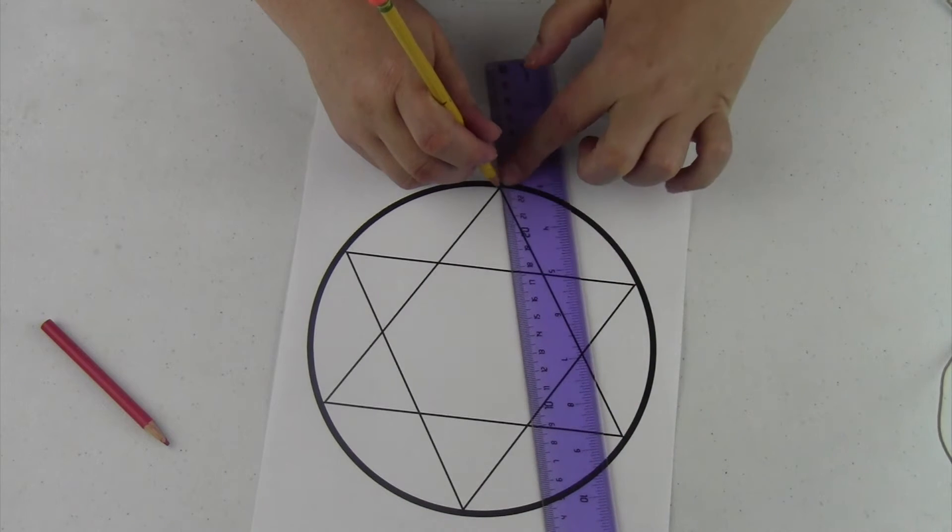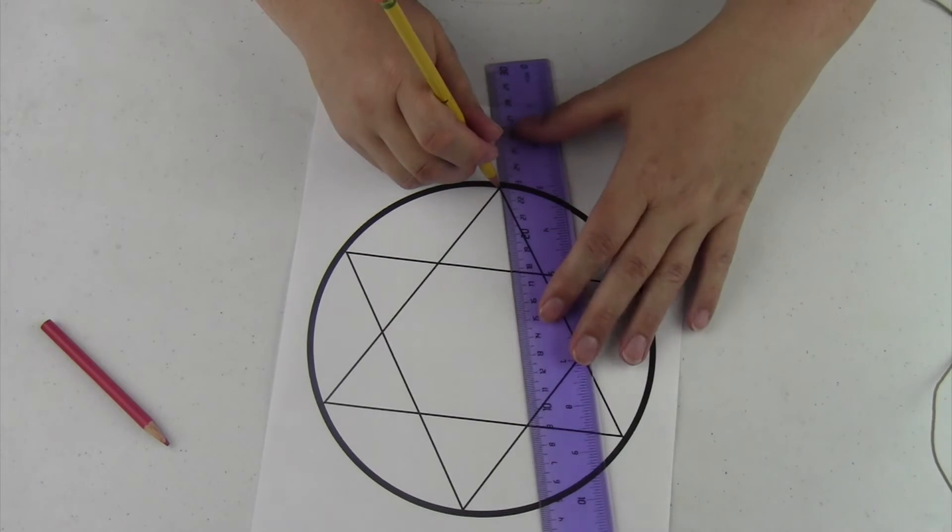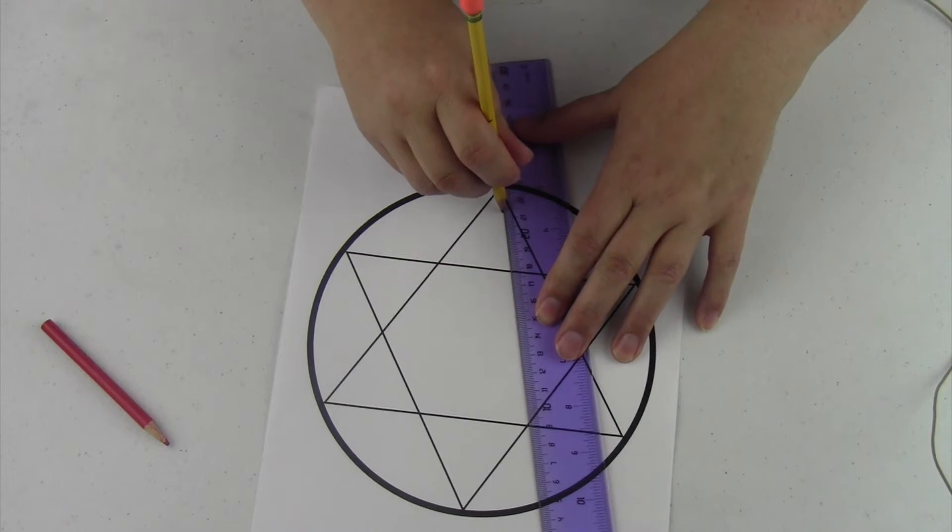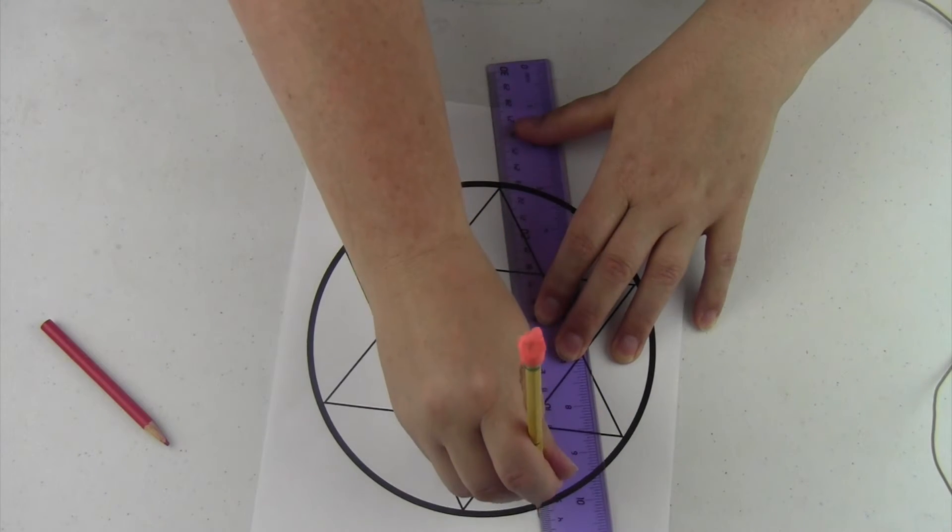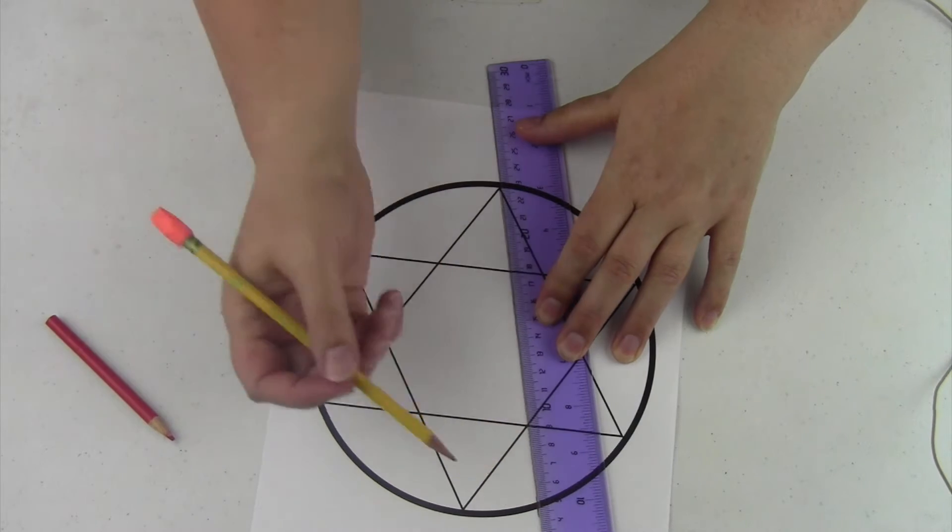We're going to line up the top of the triangle, or the bottom of the triangle, however you want to look at it. Whatever mark that is, you're going to go through. Mark that here, and that's going to create a mark here. Make it a little bit larger than the circle so you can see when we're going through.